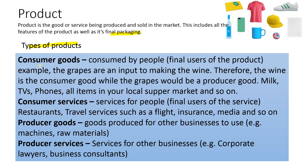There are types of products. Consumer goods are consumed by the final user of the product. For example, grapes are an input to making wine, so the wine is a consumer good while the grapes would be a producer good. The person that turns the grapes into wine uses them as a producer good, and the final product — wine — is a consumer good.